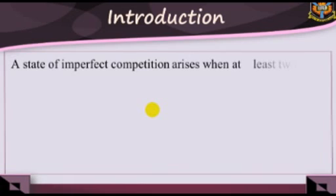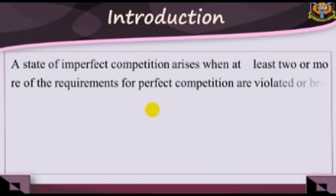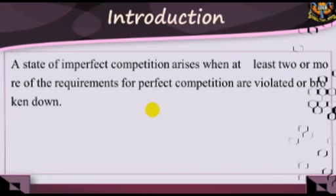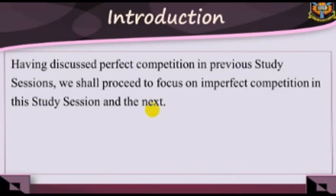A state of imperfect competition arises when at least two or more of the requirements of perfect competition are violated or broken down. Having discussed perfect competition in the previous study session, we shall proceed to focus on imperfect competition in this study session and the next.